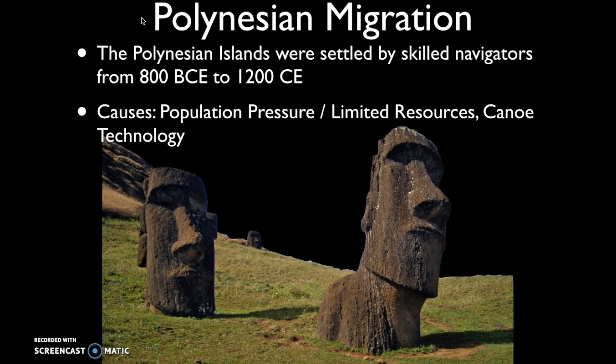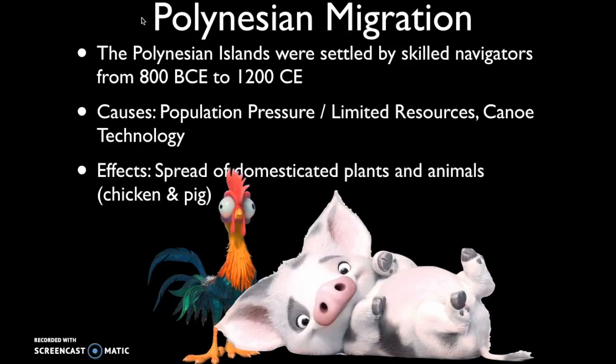The effects of this migration involve the spread of domesticated plants and animals — chickens and pigs. That's one reason I love Moana; I think it's actually relatively historically accurate in that they were bringing domesticated animals — chickens and pigs — with them. And that's one piece of evidence that Polynesians may have made it to the Americas: chicken bones have been discovered that suggest Polynesian people actually did make it to the Americas.